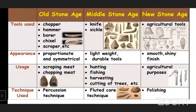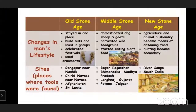What is the percussion technique? This technique involves beating or striking one large pebble against another to obtain stone flakes - just as I taught you. Then the fluted core technique in Middle Stone Age, and polishing technique in New Stone Age. Next we can see the changes in man's lifestyle in Old Stone Age, Middle Stone Age, and New Stone Age.